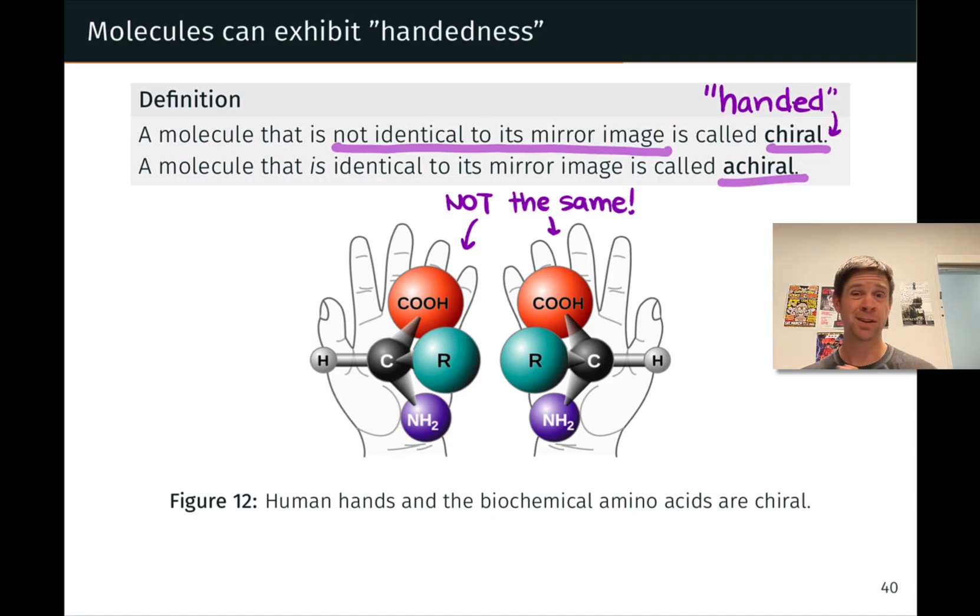Things like screws, where a right-handed screw turns differently than a left-handed screw. Your hands, your right hand and left hand feel different when you're interacting with other handed objects, such as scissors, which are right-handed and left-handed, depending on which hand feels more natural to use those scissors with. So this idea of being non-identical to your mirror image does have and evoke this idea of handedness from everyday life.